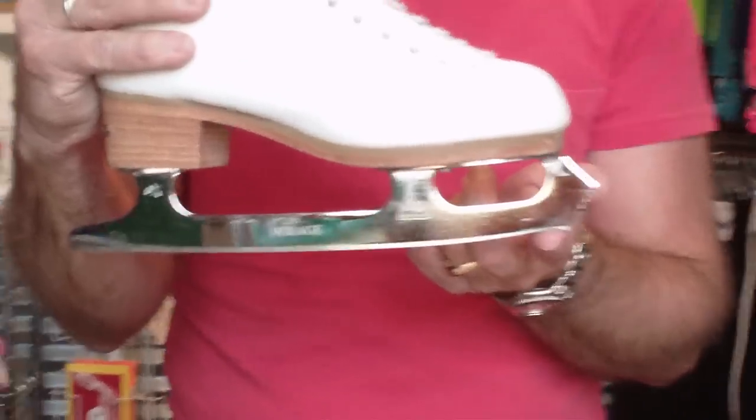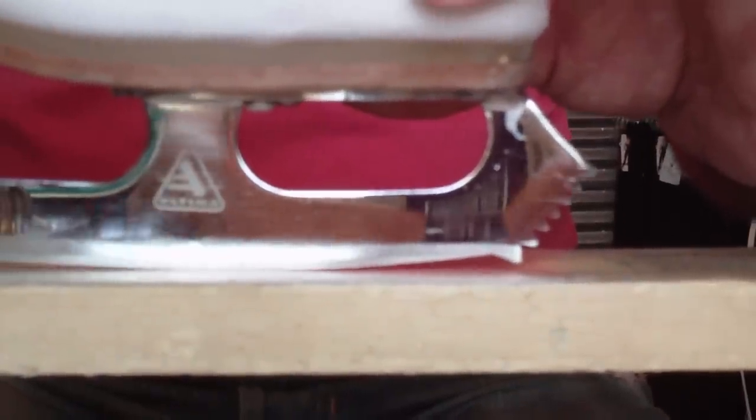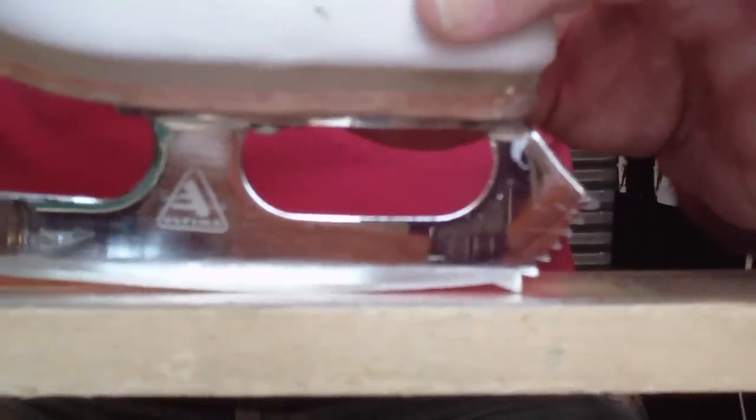Right behind the toe pick area is a tiny little area where the skater actually cannot make contact with the ice. You can see the space in there. We sometimes in industry refer to that as the unskatable part of the blade. Now the area behind it that you see the blade teetering back and forth on, that's the rocker.